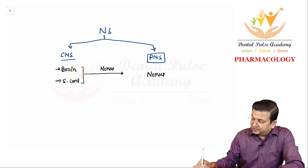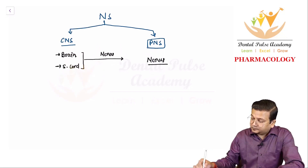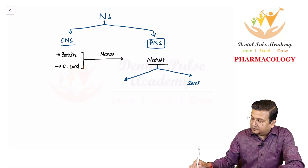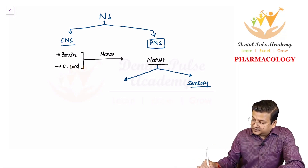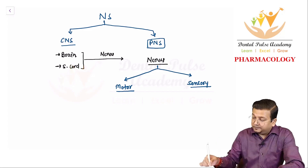The peripheral nervous system is a system of nerves. Nerves can be of two types: sensory nerves, which bring sensation into the CNS, or motor nerves, which carry impulses from the CNS to all parts of the body.